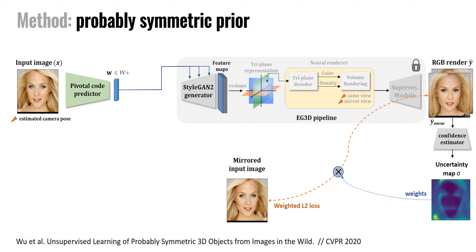We additionally make the encoder more 3D-aware by applying a probabilistic symmetric prior, inspired by the work by Wu et al. In the first phase, we render the head from a mirror camera view and compare it to the mirrored input image using a weighted penalty. The weights are defined by an uncertainty map, where higher confidence is given to pixels that are more likely to be the same as in the mirrored image. The loss is applied to both branches.